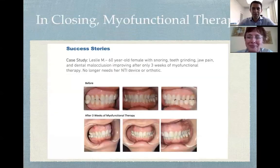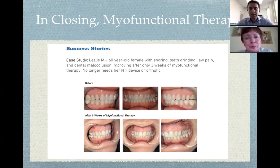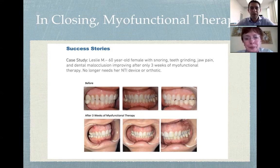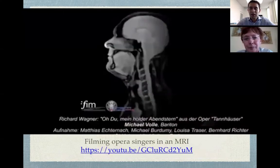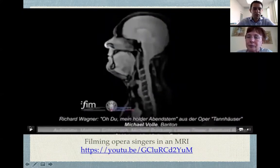That gives you a sense of what myofunctional therapy is all about. In closing, myofunctional therapy can really help with speech, swallow, and sleep apnea issues, but it can also help with orthodontic occlusion. Here's an example of a lady who came to us with snoring, teeth grinding, jaw pain, and dental malocclusion. After only three weeks of myofunctional therapy, she significantly improved in many of these areas without needing an NTI device or orthotic — you can see her dental occlusion already improving with only three weeks of therapy.